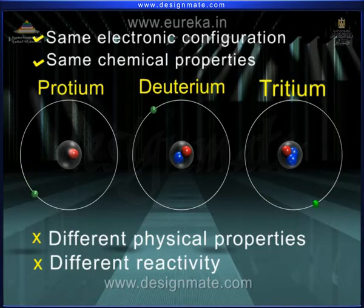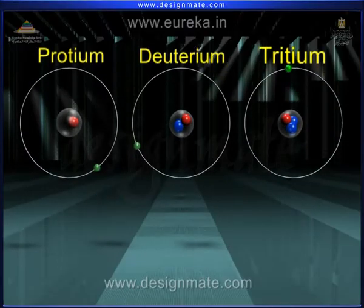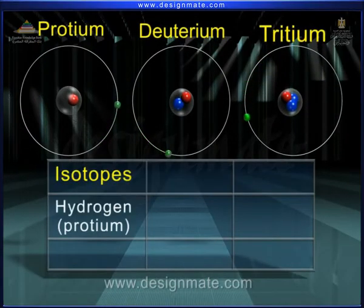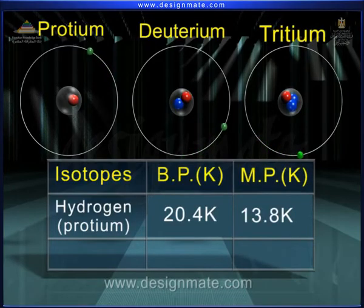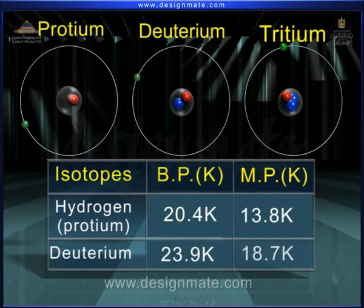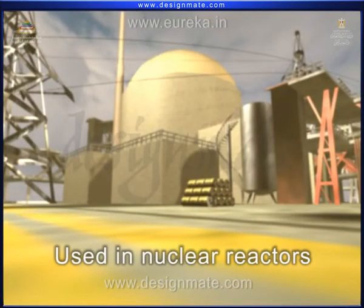Normally, the protium is more active than the deuterium. Some properties of protium and deuterium are shown. Boiling point of hydrogen is 20.4 Kelvin and its melting point is 13.8 Kelvin. Boiling point of deuterium is 23.9 Kelvin and its melting point is 18.7 Kelvin. Generally, heavy water used in nuclear reactors contains deuterium.